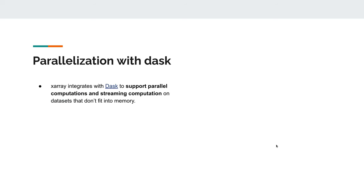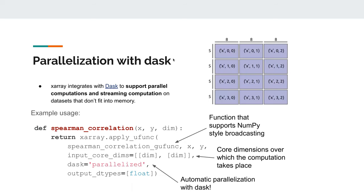Parallelization with Dask works by automatically using subsets of your arrays and applying all the math you want to do on different subsets. It supports parallel computation and also streaming computation, which is interesting if you have very large data or things that don't fit in memory anymore — for instance, metagenomics with thousands of genomes where you want to apply operations in a streaming parallelized computation, as long as your data is stored in the right data structure.